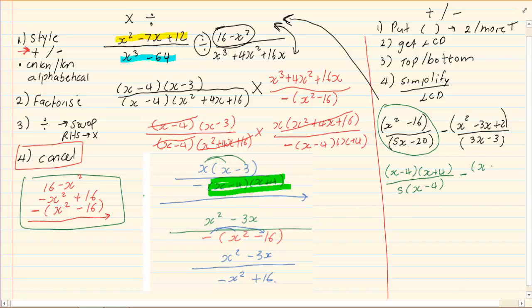Minus, factorize the top, x minus 2, x minus 1 all over 3 into x minus 1. Cancel where you can. Following the rules of multiplication and division.